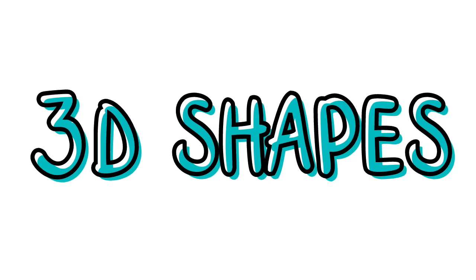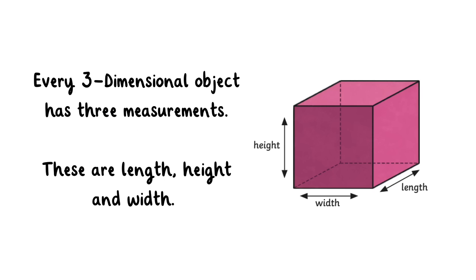Now that we've learned a few 2D shapes, let's move on to 3D shapes. Every three-dimensional object has three measurements. These are length, height, and width.